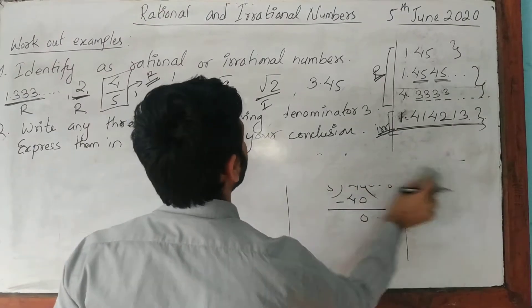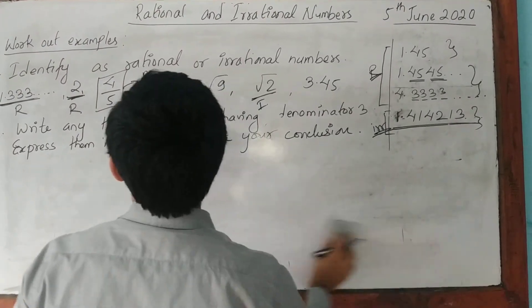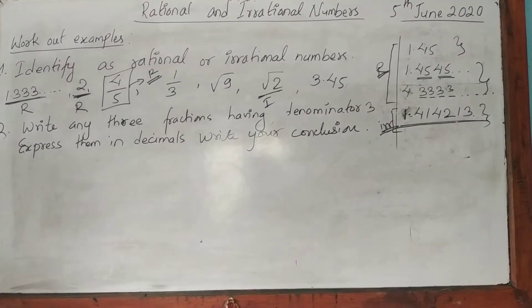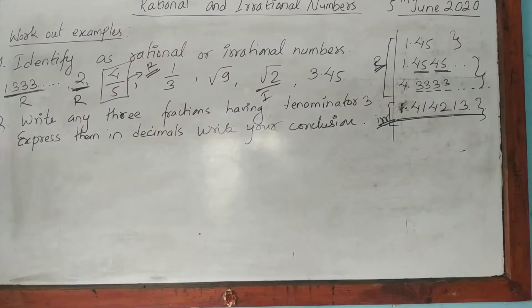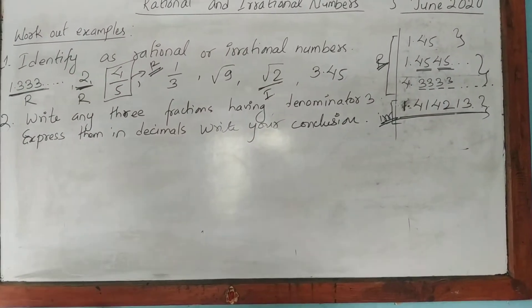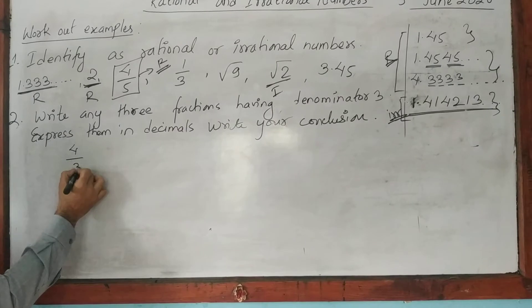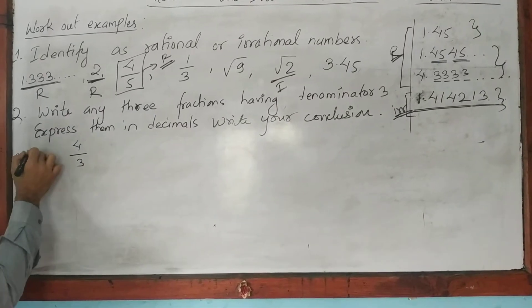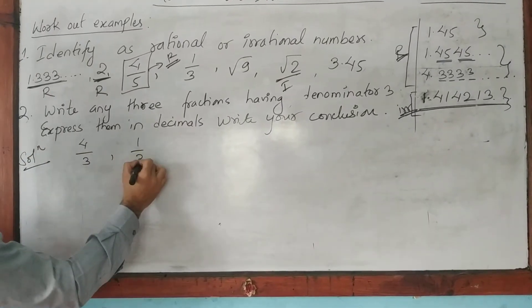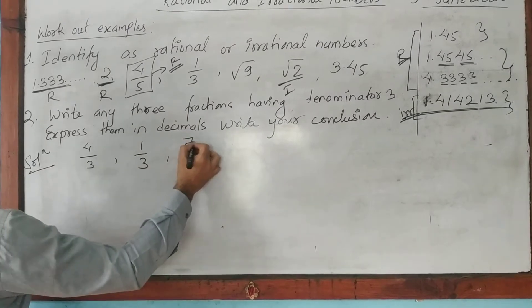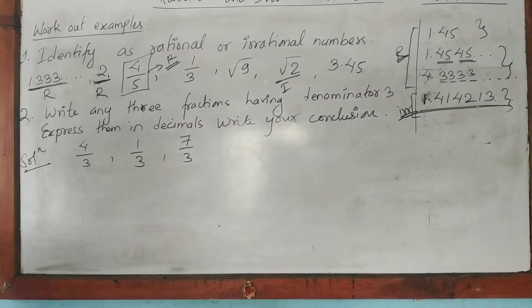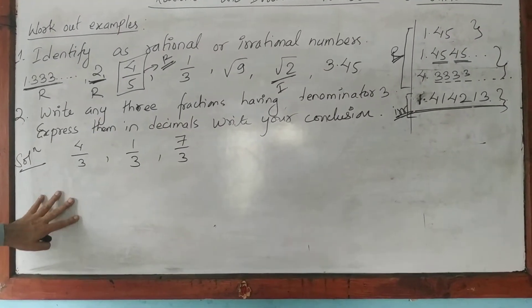Now let's move to the second position. That is, we have to write three fractions that have a denominator of 3. Let me do it. Three fractions with denominator of 3: 4 by 3, 1 by 3, 7 by 3.